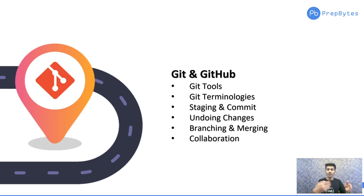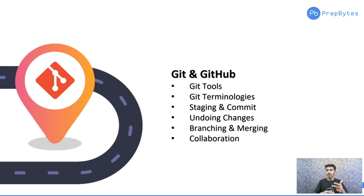With version control, if someone changes something in JavaScript and your entire application crashes, you can revert back to a previous version that was committed to your repository. To learn Git and GitHub, start with the Git tools, get familiar with the terminologies, learn how to stage, commit, undo changes, branch, and merge — and then learn how to collaborate using Git and GitHub.